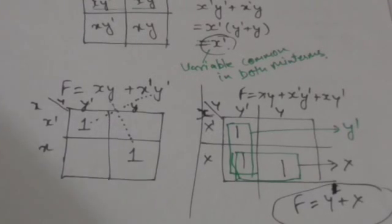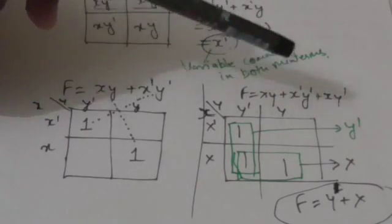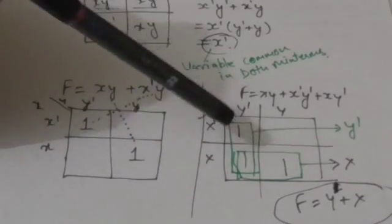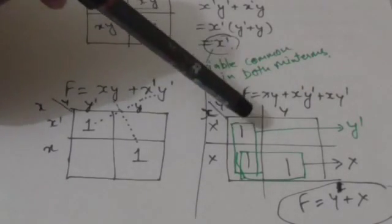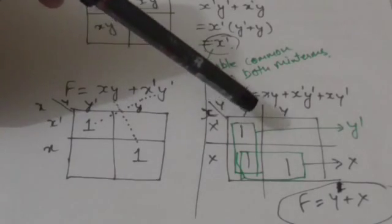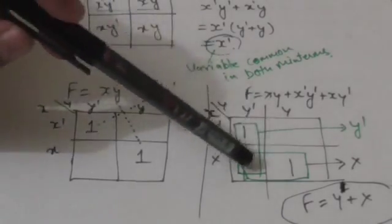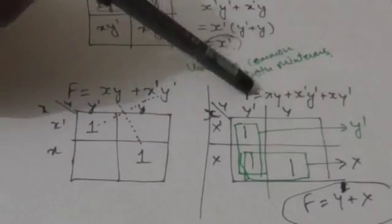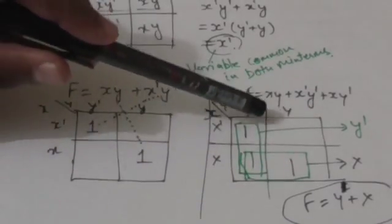Looking at the min term x·y — it is represented by the square whose row is labeled x and column is labeled y, so I have marked that square with a 1. The min term x-naught·y-naught is represented by its corresponding square, also marked with a 1. The square representing x·y-naught is also marked because the min terms of these squares are included in function f.